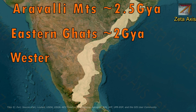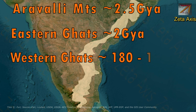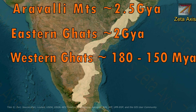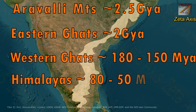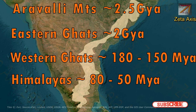On the contrary, if we compare the Western Ghats, they were formed around 180 to 150 million years ago, while the Himalayas were formed around 80 to 50 million years ago.